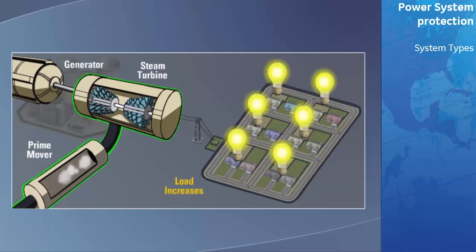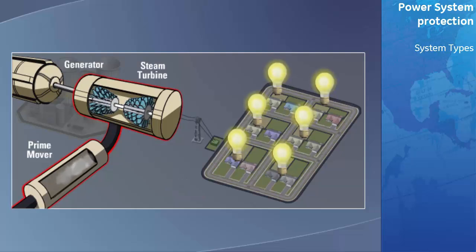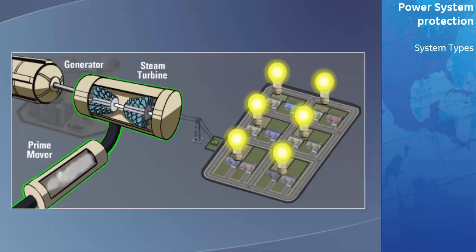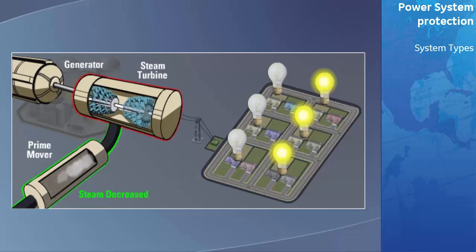As the load increases, the generators would tend to slow down, resulting in a reduction of output voltage and frequency. The generator's control system will sense this and input more mechanical energy to match the increased load. If the demand decreases, the generator will speed up. The control system senses this and then takes appropriate action to reduce the mechanical energy input into the system.